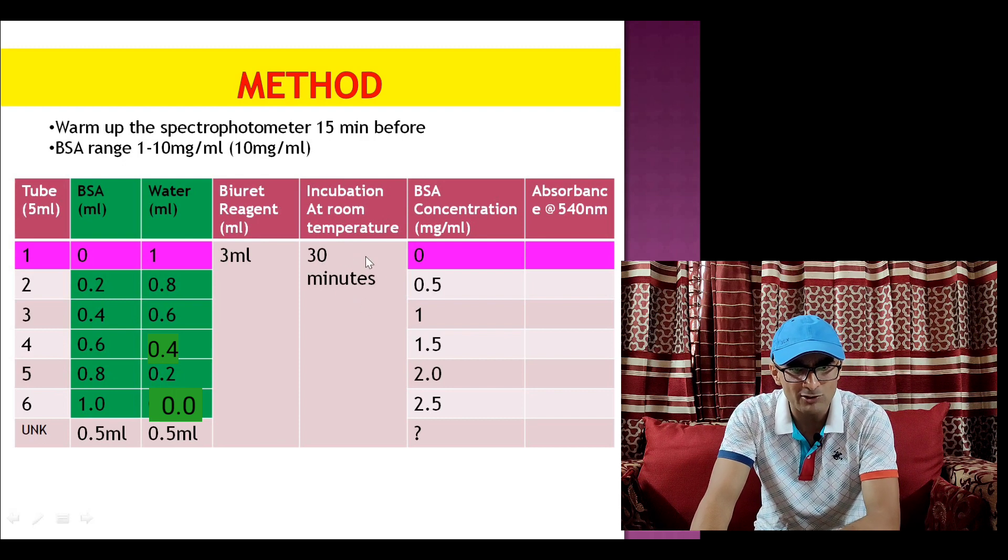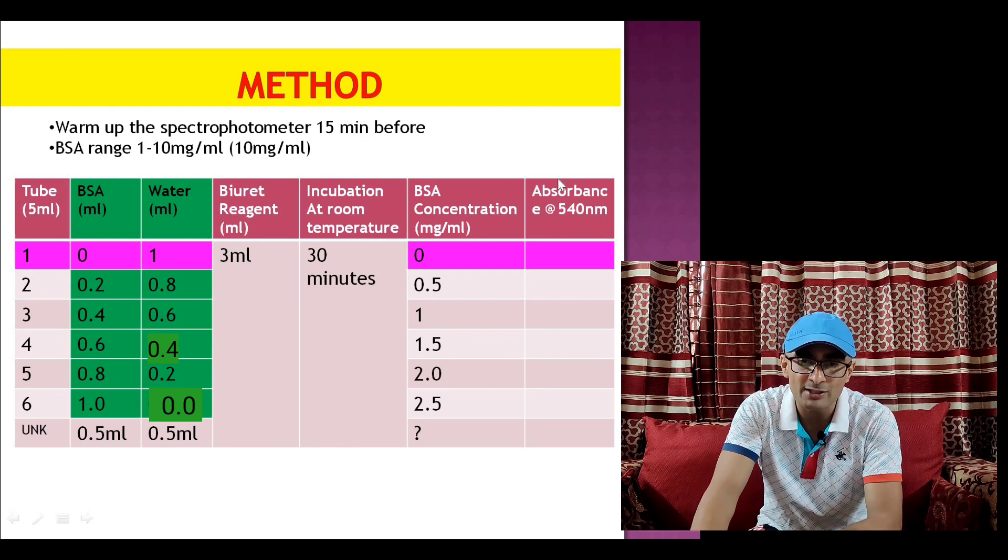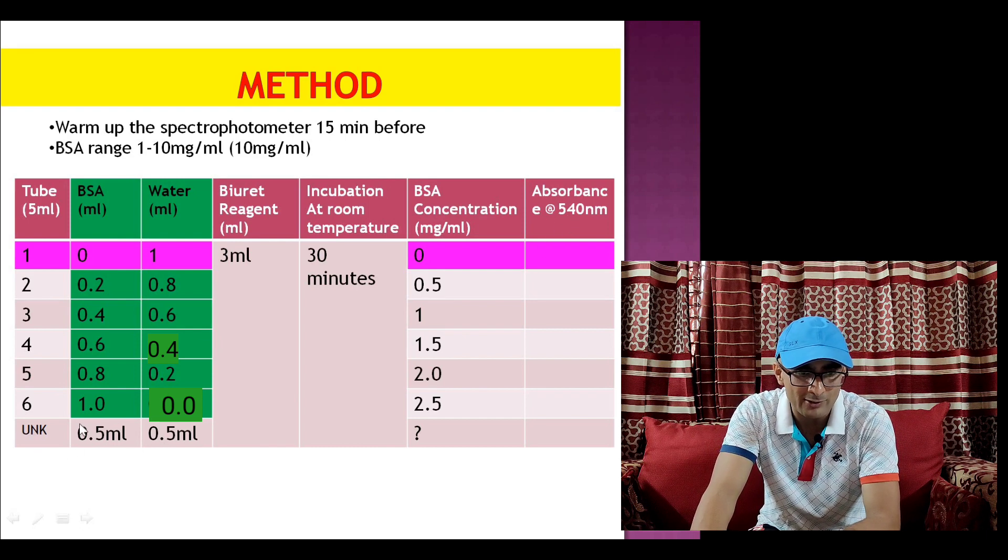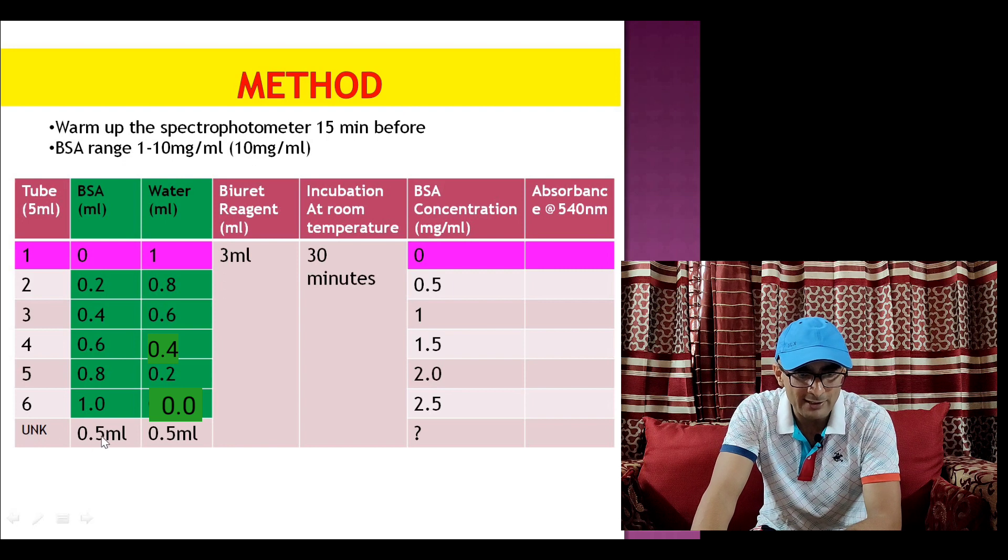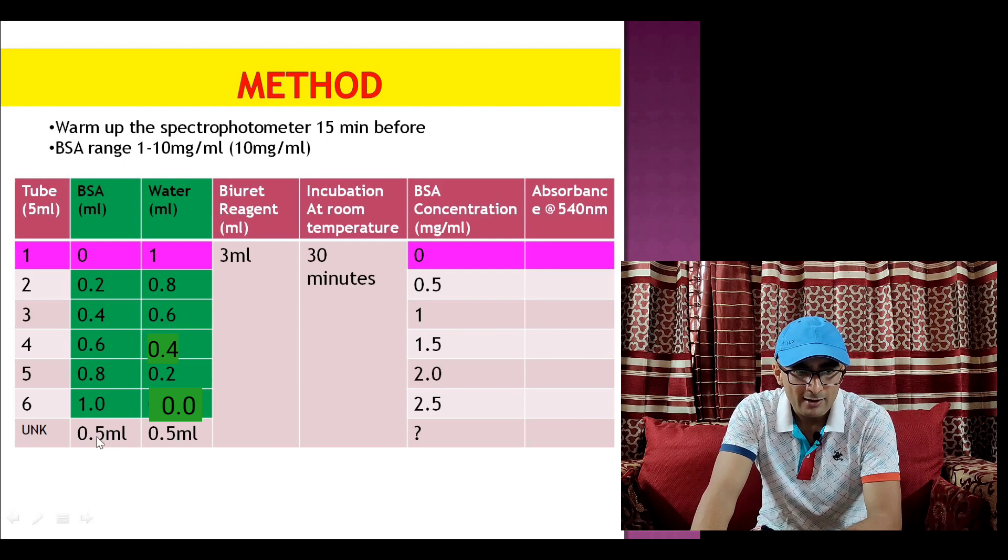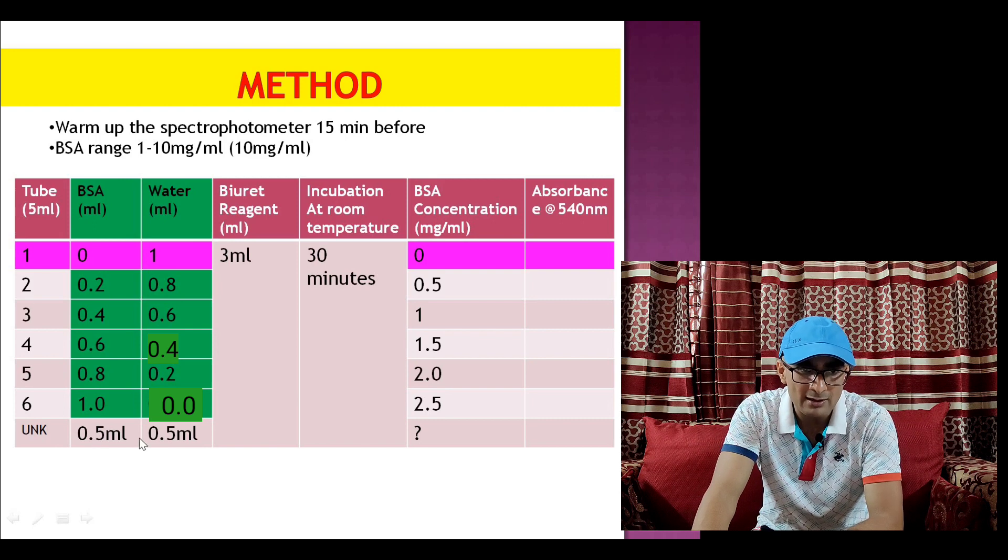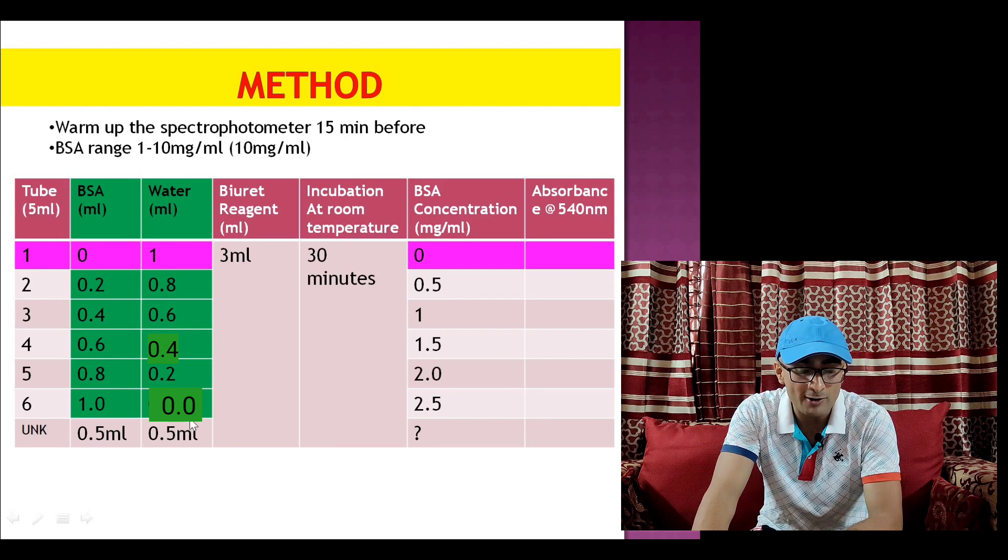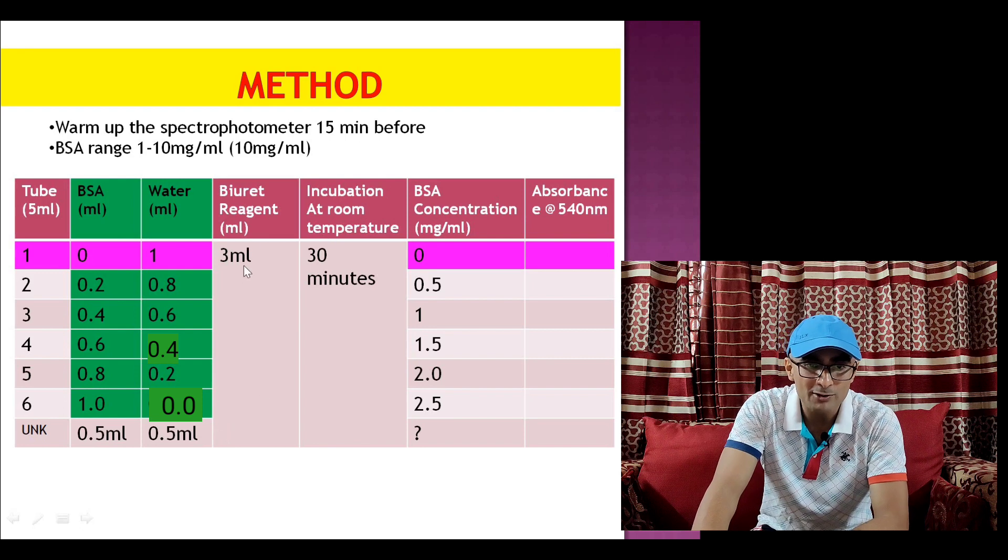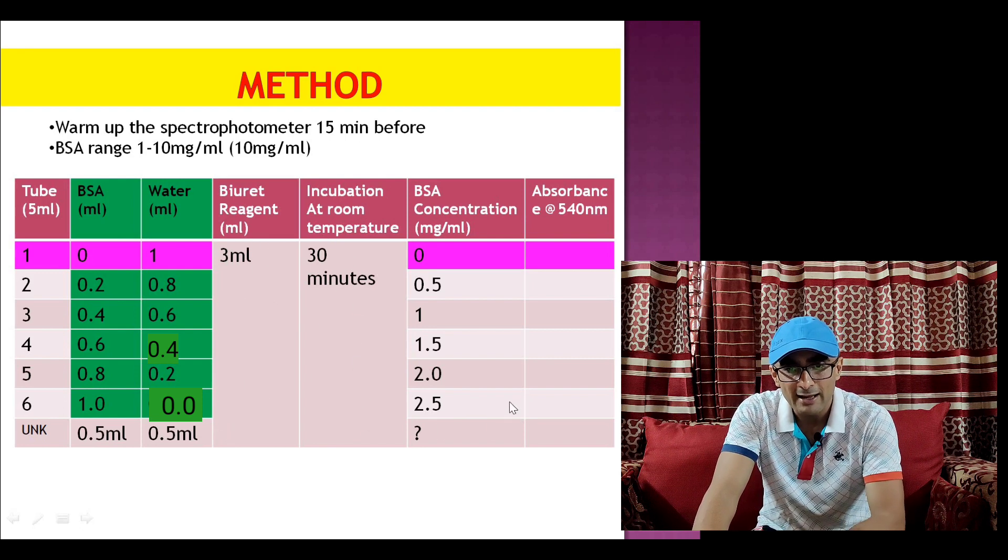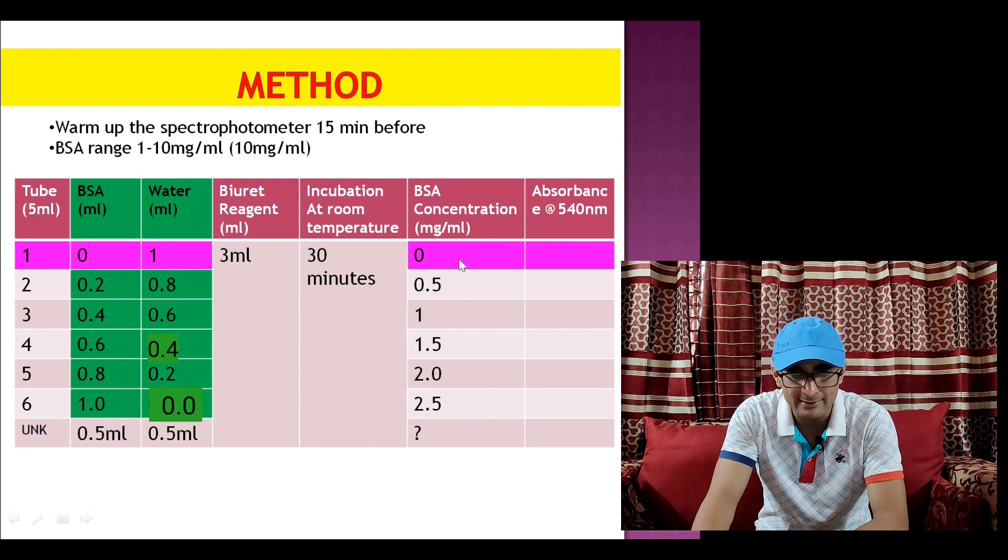After 30 minute incubation absorbance at 540 nanometer is taken. At the same time unknown which we need to calculate concentration, that is also taken, say 0.5 ml of unknown protein sample. We add 0.5 ml of water to make total reaction volume 1 ml and add 3 ml of biuret reagent, incubate for 30 minutes, and absorbance is taken.